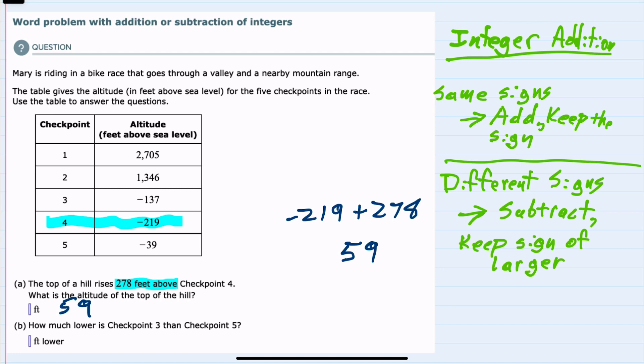Moving to question B, we're asked how much lower is checkpoint 3 than checkpoint 5. Since we're comparing to checkpoint 5 we would start with checkpoint 5 which is negative 39 feet.